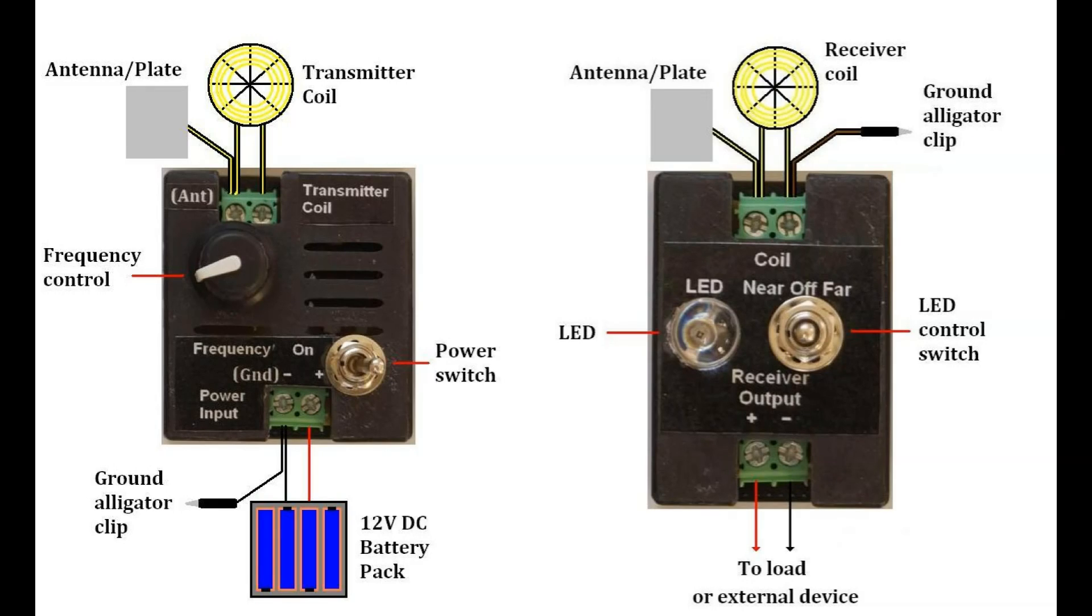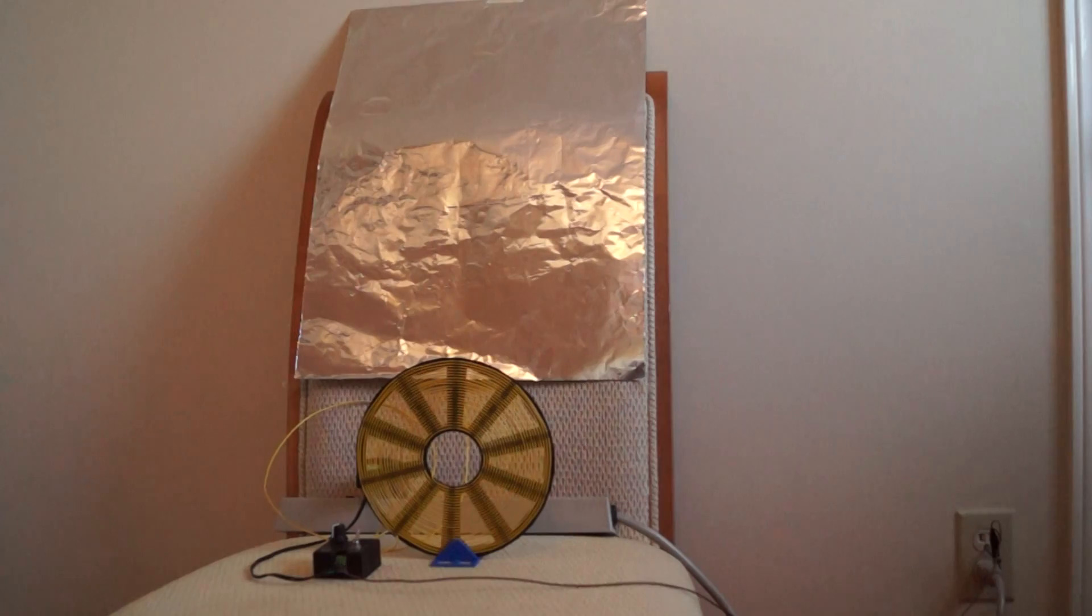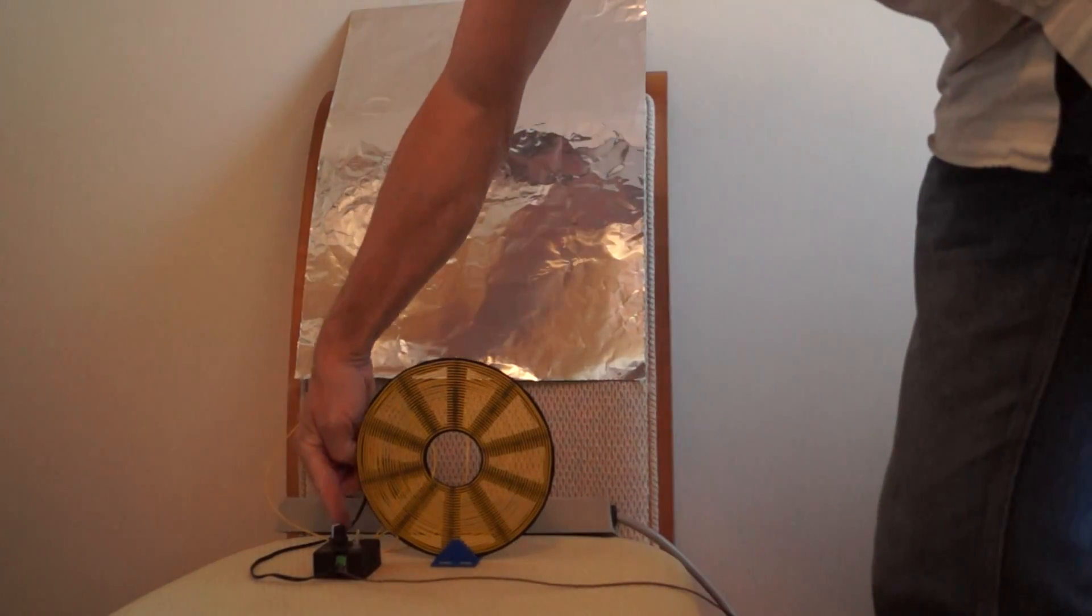The wireless power is not limited to short range. By adding an antenna plate and earth ground connection, it is possible to send useful power 36 feet or more. The antenna plate and ground are connected as shown.